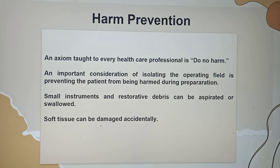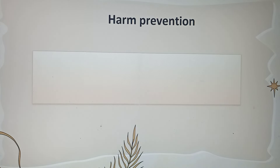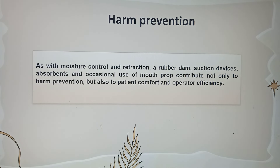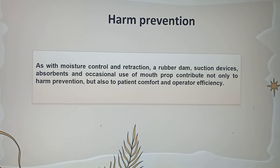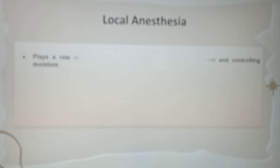Harm prevention — the patient can be harmed accidentally, and the way we manage this is through proper isolation. As with moisture control and retraction, a rubber dam, suction device, absorbents, and occasional use of a mouth prop contribute not only to harm prevention, but also to patient comfort and operator efficiency.